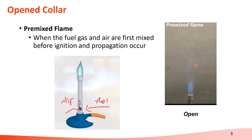The flame color turns to blue and the shape becomes very stable without a shaking movement. The pre-mixed flame is occurred when the fuel gas and air are first mixed before the ignition or propagation occurs. When we open the collar of the Bunsen burner,